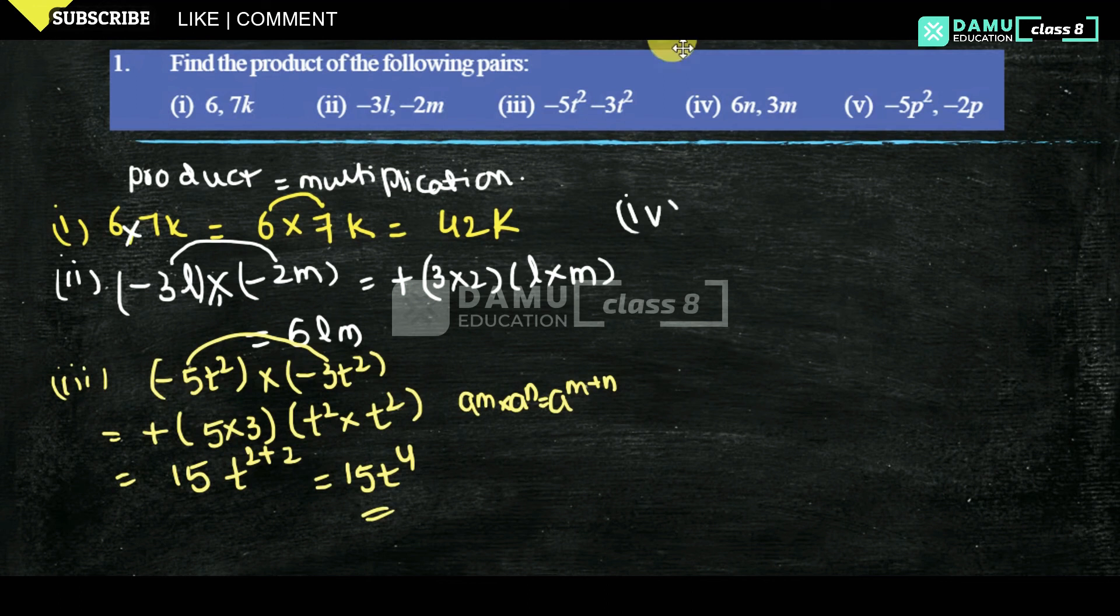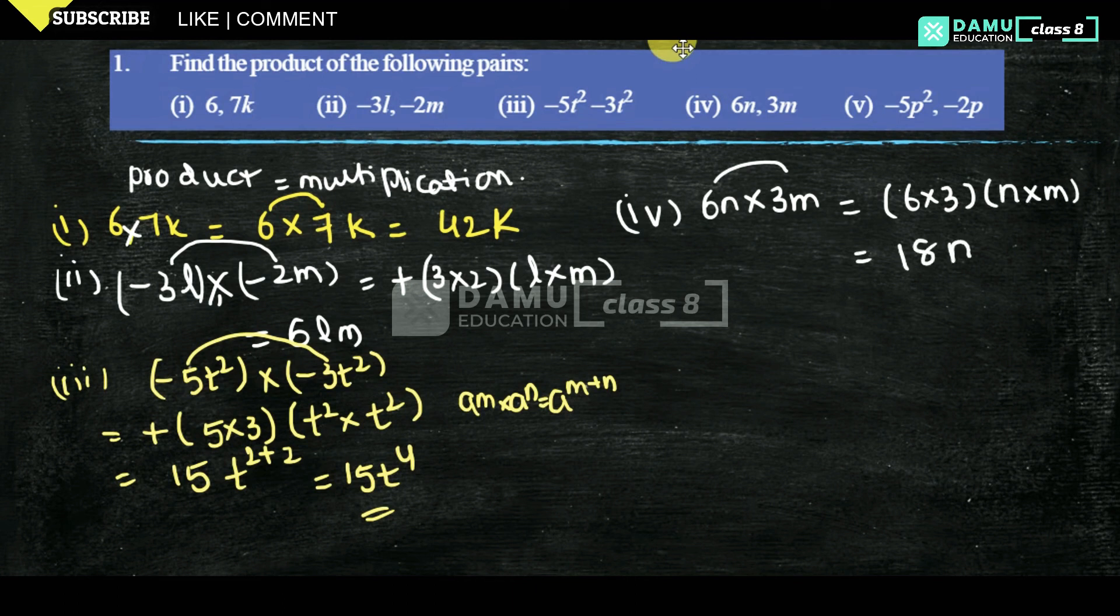Our fourth one is 6n into 3m. So 6 into 3, first you multiply 6 with the 3, into n into m. So 6 threes are 18 nm. So that is the answer.